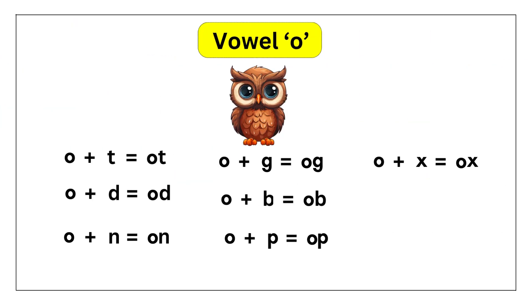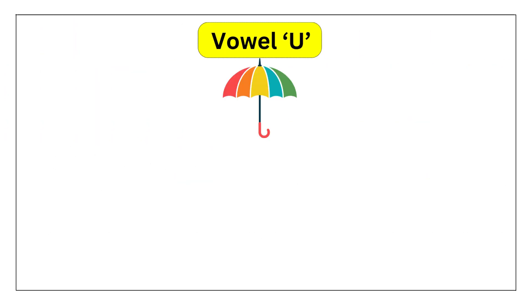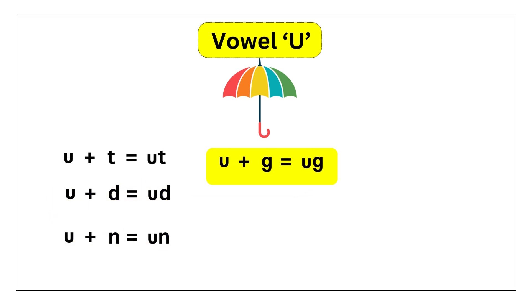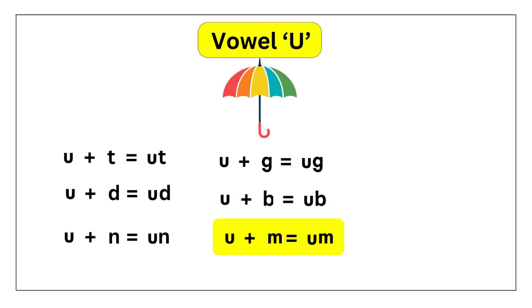Let's move on to Vowel U. U-T: UT. U-D: UD. U-N: UN. U-G: UG. U-B: UB. U-M: UM. U-S: US.